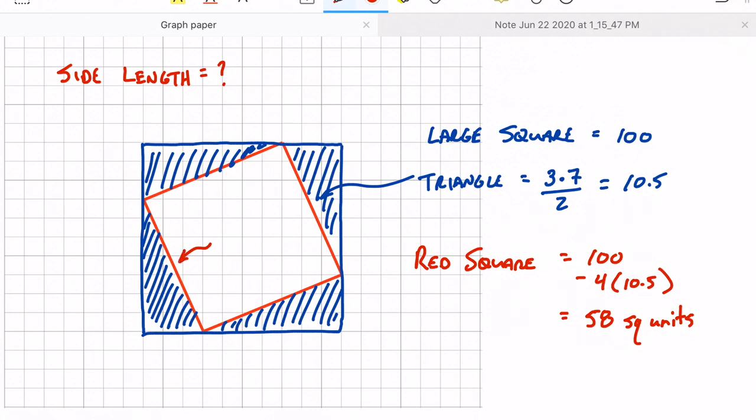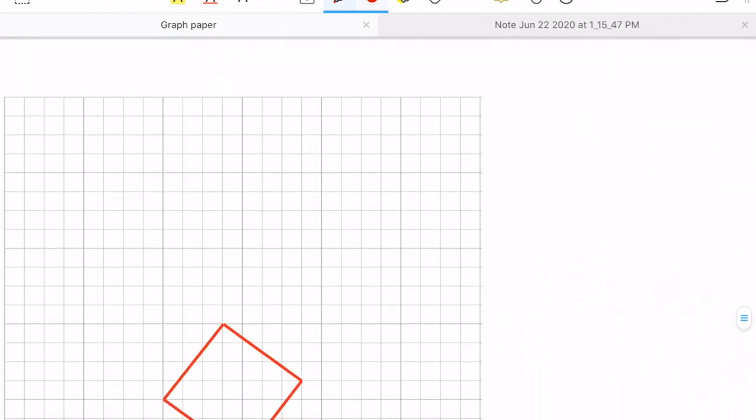And if I want to find the length of a side, I take the square root. So that side is root 58. You can estimate that if you want to or use a calculator. I'm going to leave it as root 58.